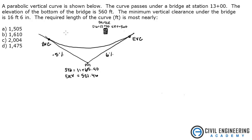Welcome to Civil Engineering Academy. Today we're solving a problem from transportation. A parabolic vertical curve is shown below. The curve passes under a bridge at station 13 plus 00. The elevation of the bottom of the bridge is 560 feet. The minimum vertical clearance under the bridge is 16 foot 6 inches. The required length of the curve is most nearly...